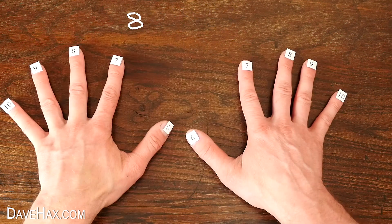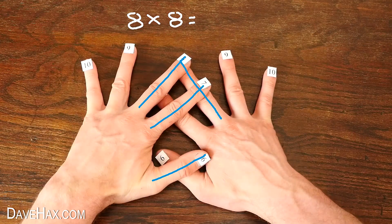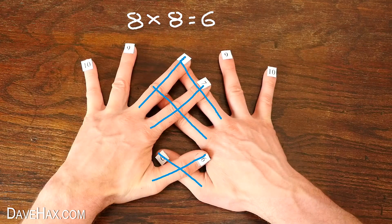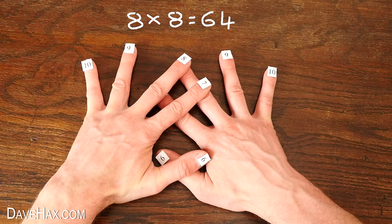If we need to multiply 8 times 8, we cross those fingers, which gives us the first digit of 6, and the second digit of 4. 64.